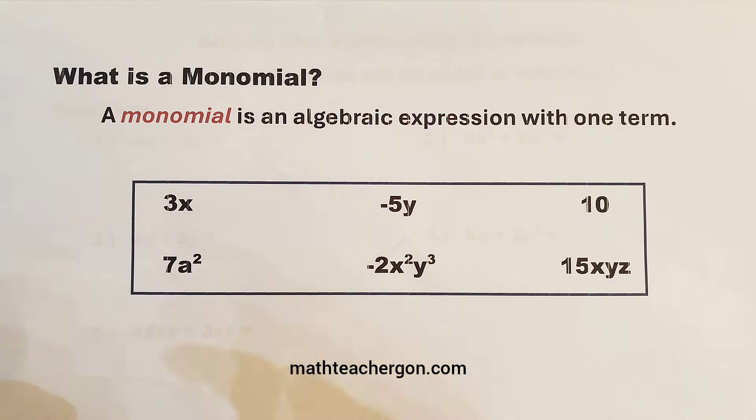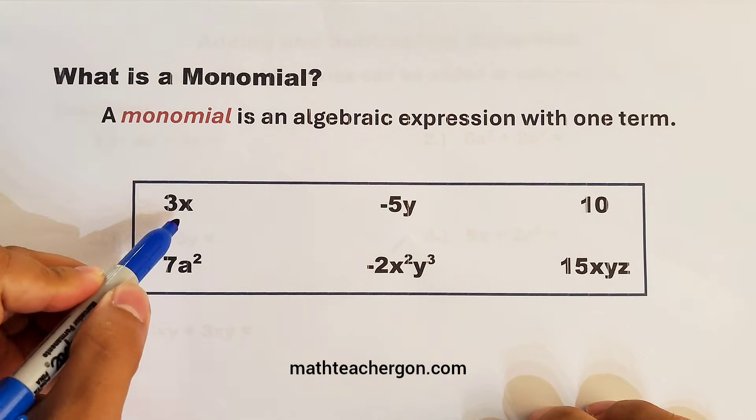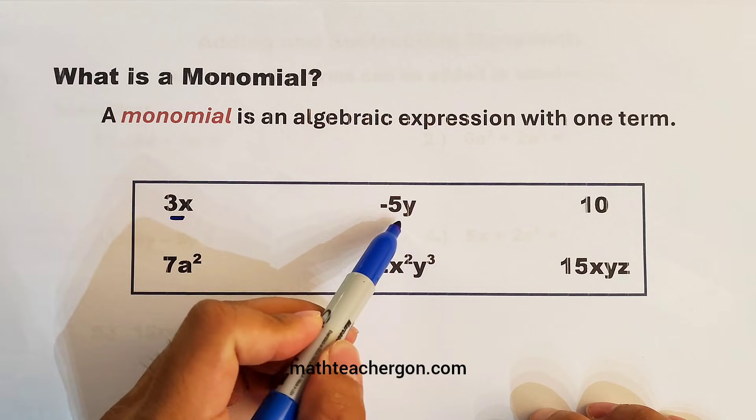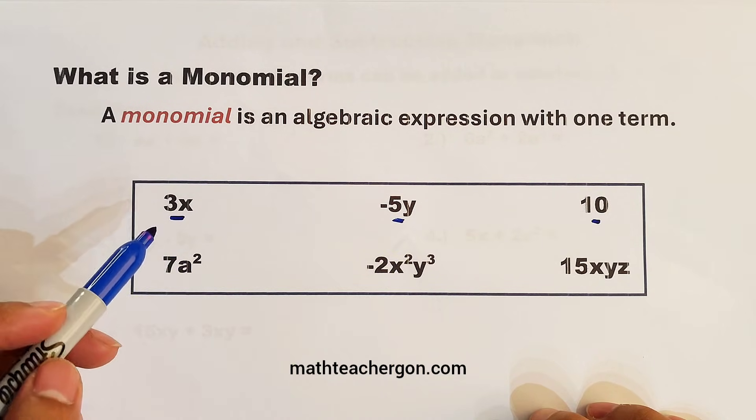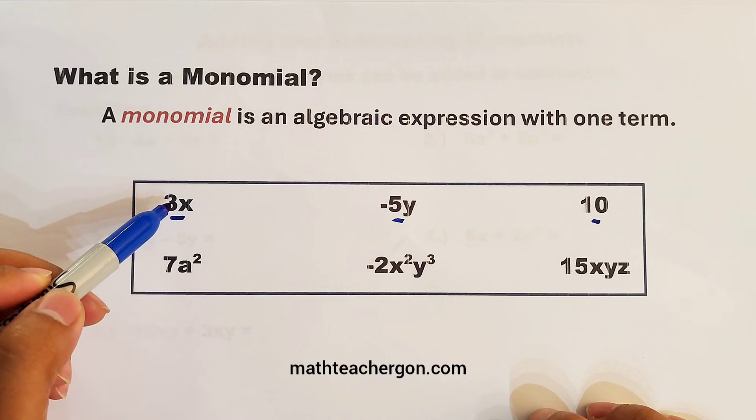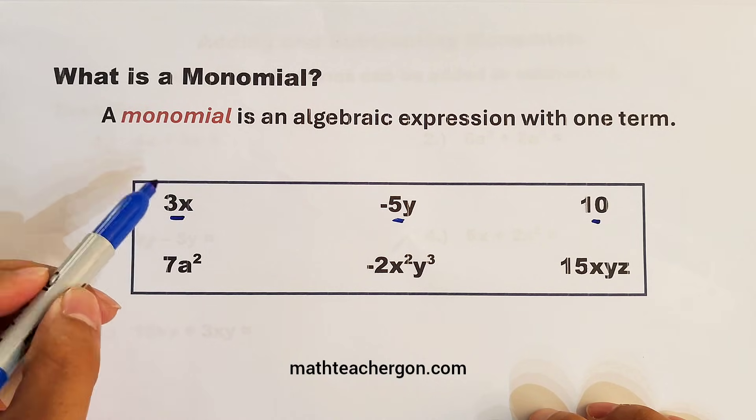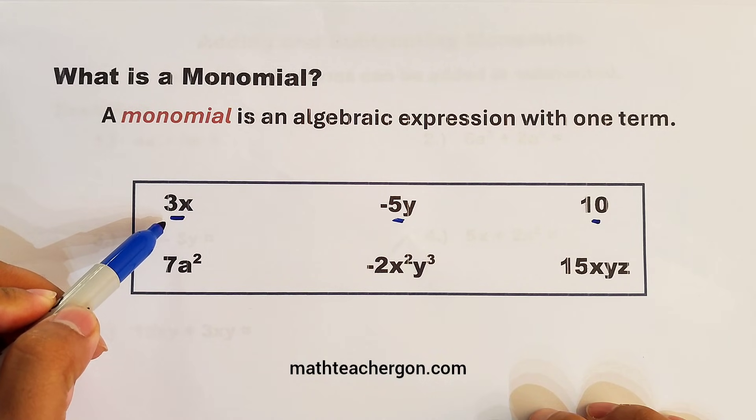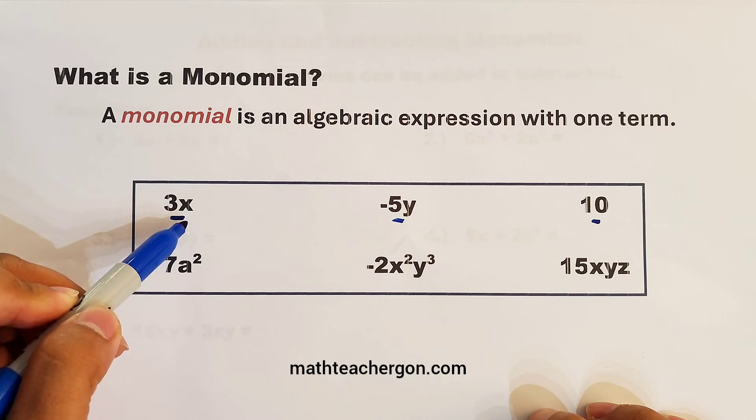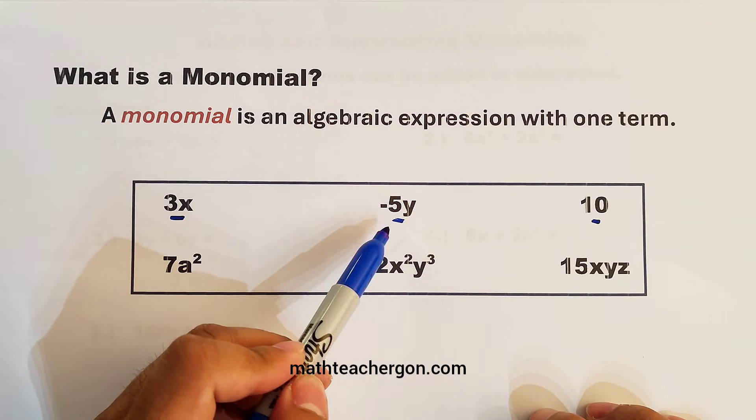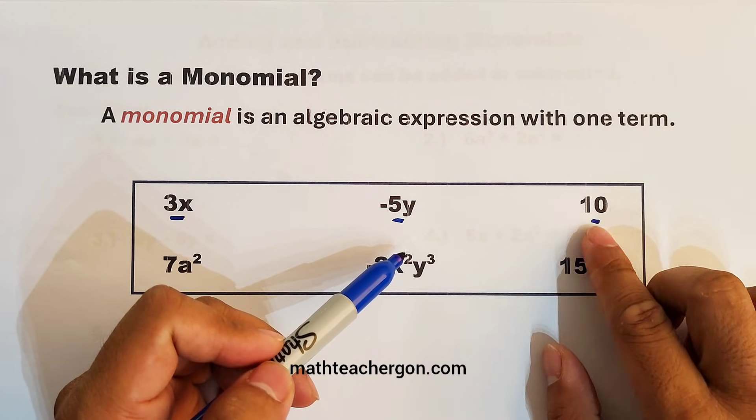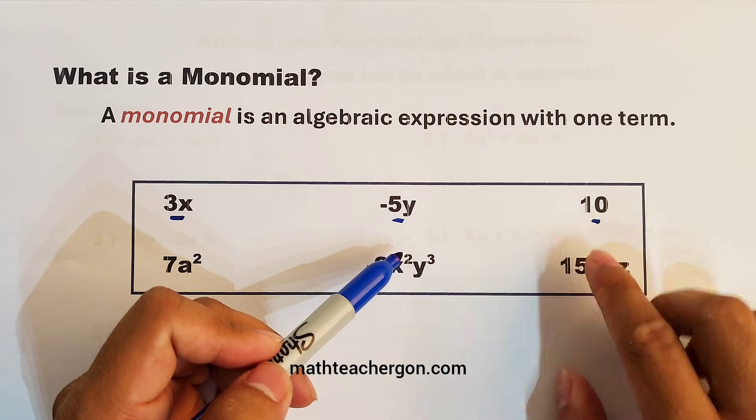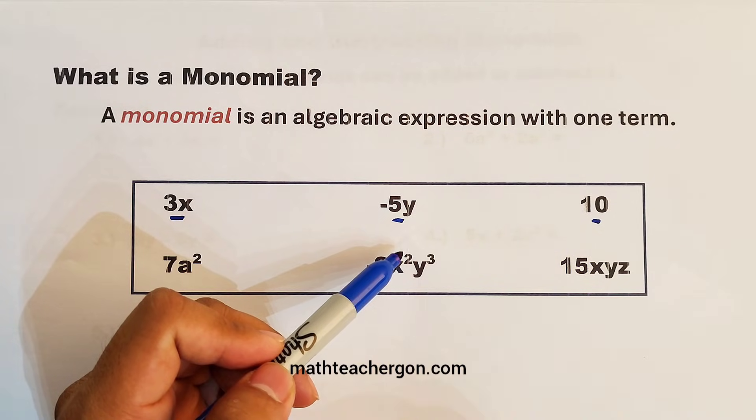Now, here are the examples. We have here 3x, negative 5y, and 10. As you can see, what we have here are examples of a monomial in which this 3x is composed of a coefficient and a variable. Same with this one, negative 5y, a coefficient and a variable. Here, this 10 is considered as monomial, though it doesn't have a variable.